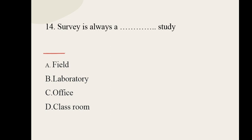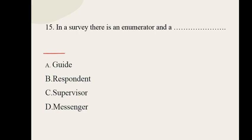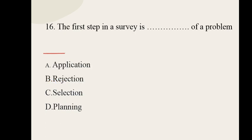Question number fourteen: survey is always a dash study. Options: field, laboratory, office, classroom. The correct option is field study. Question number fifteen: in a survey there is an enumerator and a dash. Options: guide, respondent, supervisor, messenger. The correct option is respondent. Question number sixteen: the first step in a survey is dash of a problem. Options: application, rejection, selection, planning. The correct option is selection.